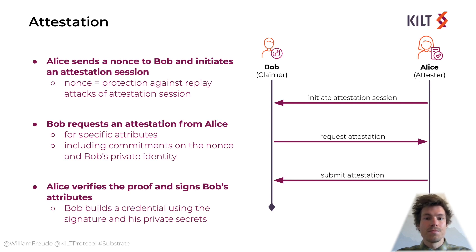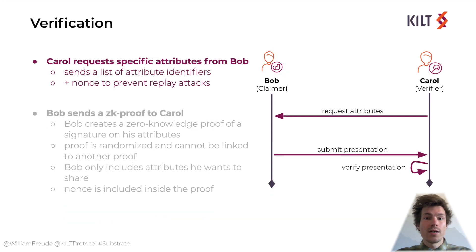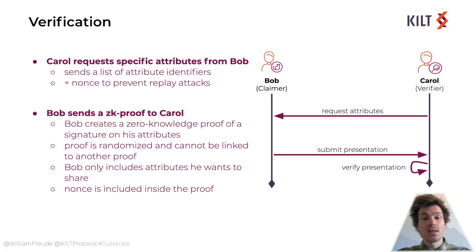The next step is verification. Bob wants to prove to a verifier named Carol that someone she trusts, like Alice, attested him certain attributes and that at the time of verification this credential has not been revoked. But this proof should be in zero knowledge, meaning that Bob does not send the whole credential and only reveals some attributes — selective disclosure. The rest is proven in zero knowledge. Also, Bob's proof is randomized and cannot be linked to another one, even if the same nonce is used multiple times, giving us multi-show unlinkability. Carol starts the verification by sending a nonce and a list of attributes she needs to see. Then Bob uses his credential, Alice's public key, and Carol's nonce to build a zero-knowledge proof on his attributes.